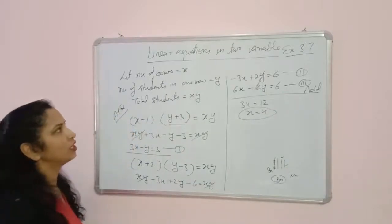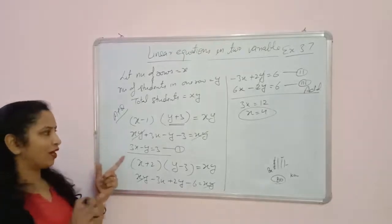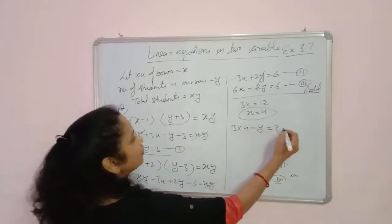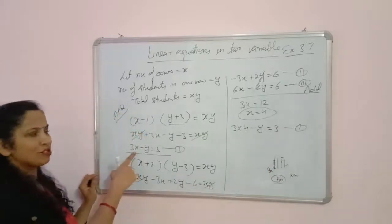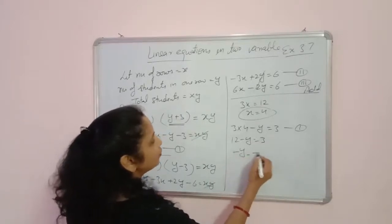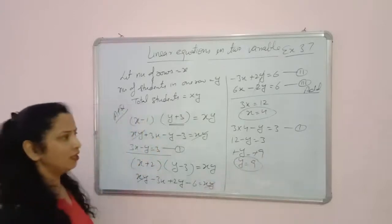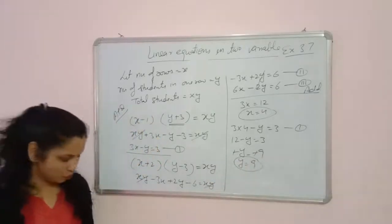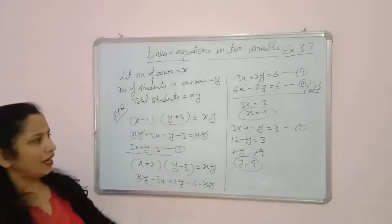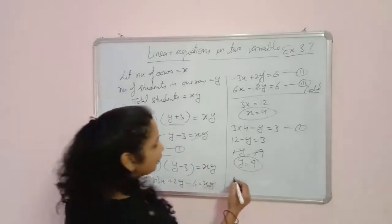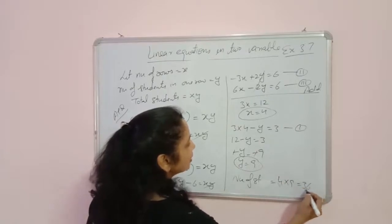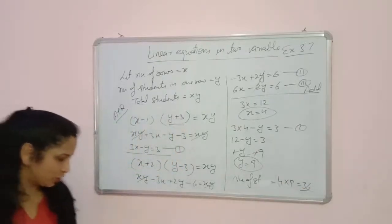Putting x equals 4 into equation 1: 3 times 4 minus y equals 3, so 12 minus y equals 3, giving minus y equals minus 9, so y equals 9. The number of students in one row is 9. Total students in the class: x times y equals 4 times 9 equals 36 students.